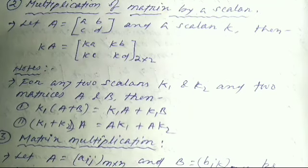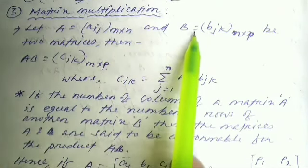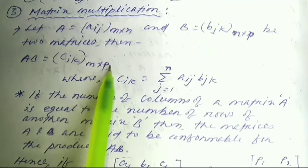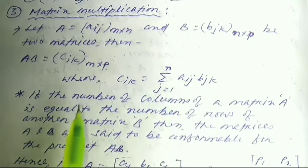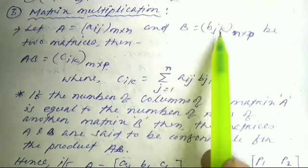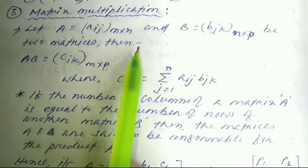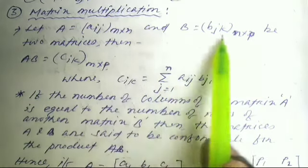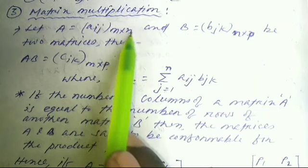Next, matrix multiplication: Let A = [aij] of order M×N and B = [bjk] of order N×P be two matrices. Then A·B = [cik] of order M×P. For multiplication to be possible, the number of columns of matrix A must equal the number of rows of matrix B — the middle values N must be common.